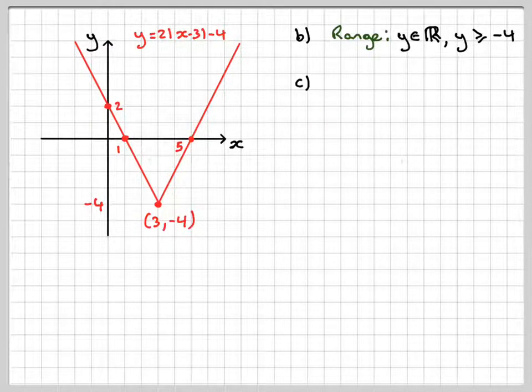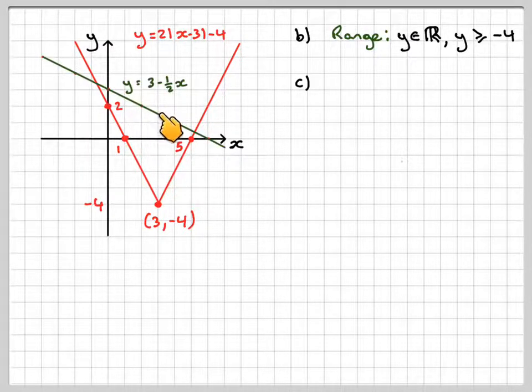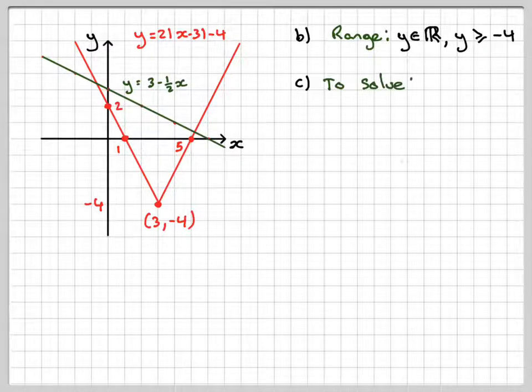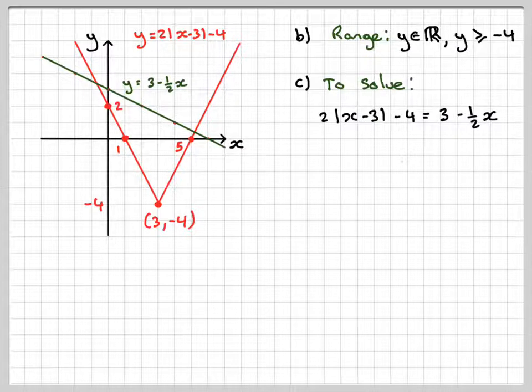If we first of all draw the line y is equal to 3 minus a half x, we will see that there are two solutions that we have to find. So, if we solve, first of all, we consider this point here. So this is the graph we need to solve. So we consider this point here at A.